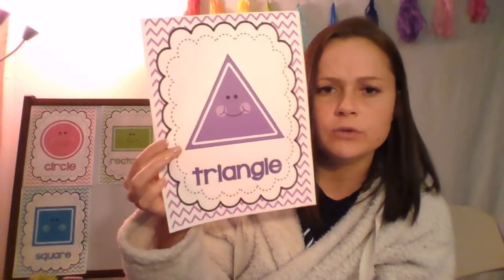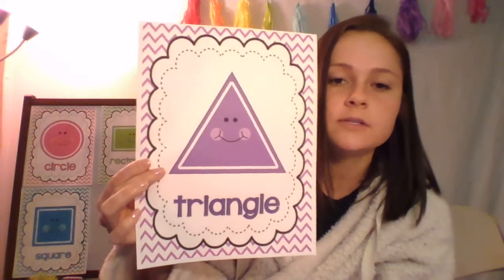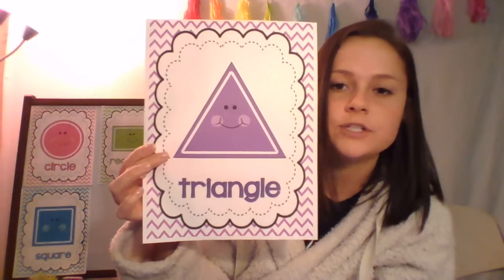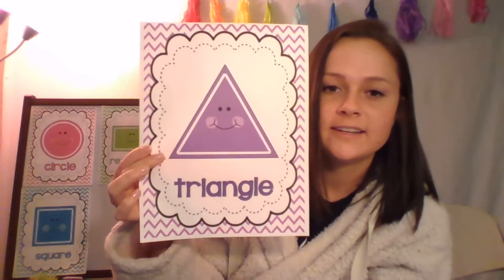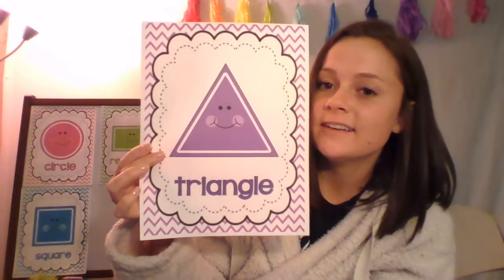A triangle — we do have a triangle. How many sides does our triangle have? I want you to look, point on the screen and count them for me, and then shout out your answer. Three. A triangle has one, two, three sides. Can you remind me what the name of our points are called? Vertices.